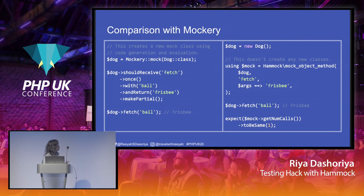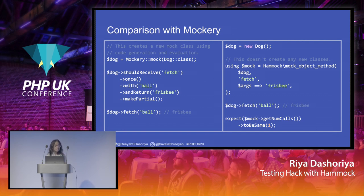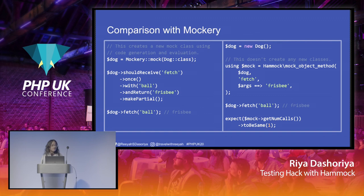This is a comparison with Mockery — on the left side is the Mockery example, on the right side is the Hammock example. In Mockery, it uses class reflection and code generation, which takes a lot of time. When mocking the Dog class, Mockery mocks a class rather than an object, then uses expectations to figure out behavior. Whereas Hammock focuses solely on mocking, leaving a smaller footprint than Mockery, and does not deal with expectations at all.